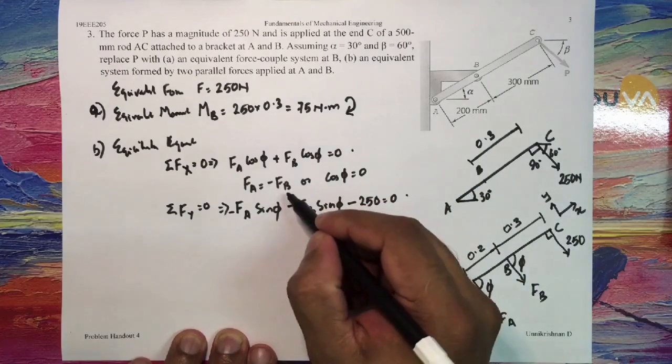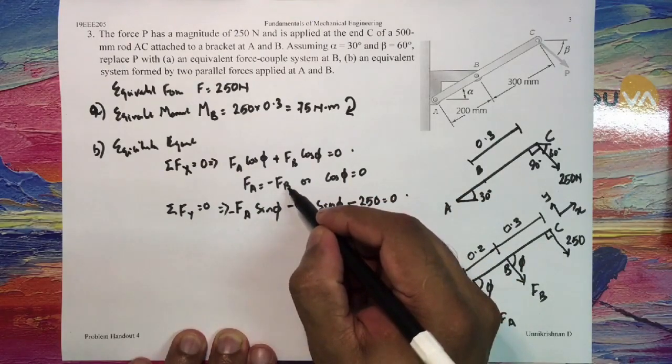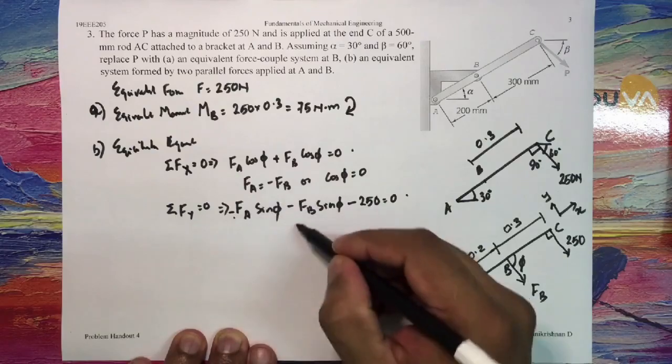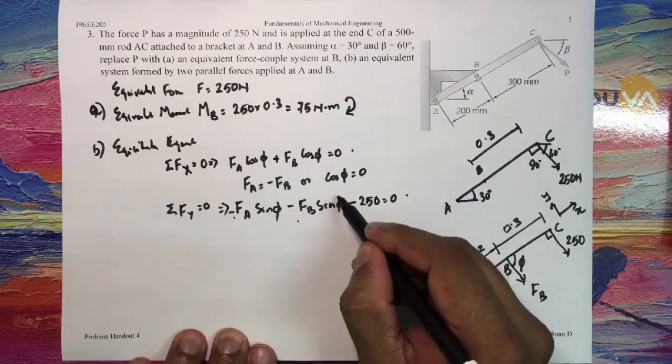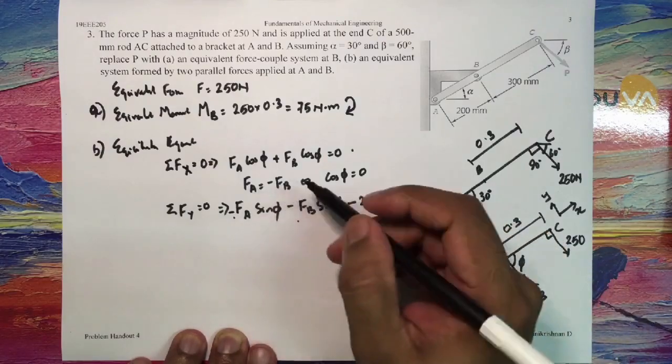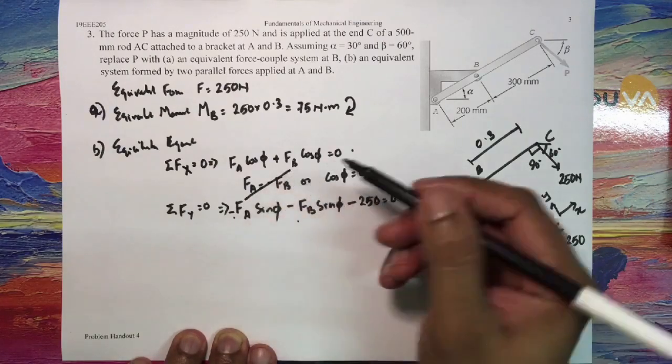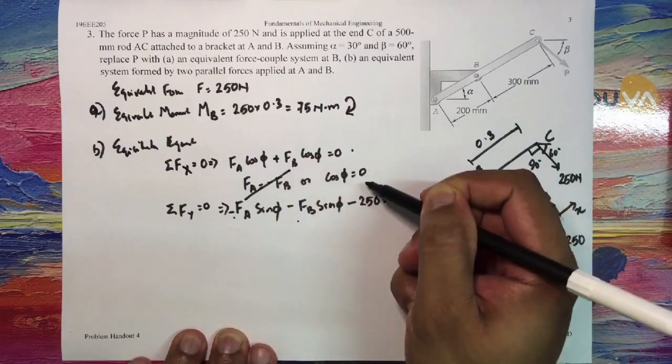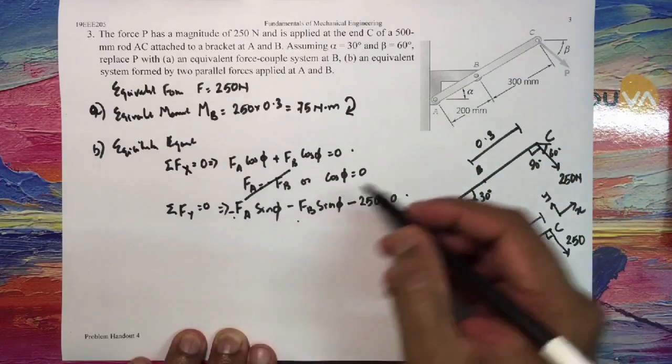If I substitute FA equal to minus FB, I get FB sin phi minus FB sin phi. These two terms will get cancelled out, and I get minus 250 equal to 0, which is not possible. So I will completely eliminate this option.